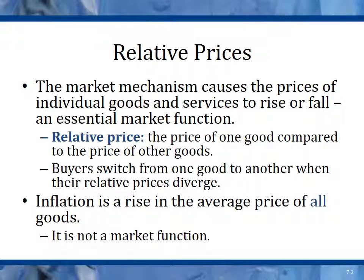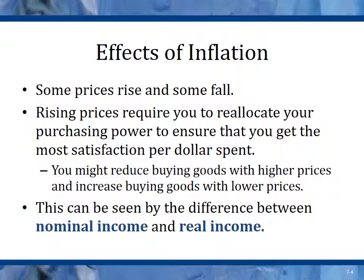Relative prices: the market mechanism causes the prices of individual goods and services to rise or fall due to supply and demand, as we talked about in Chapter 3. Relative price is the price of one good compared to the price of other goods — buyers switch from one good to another as relative prices change. Inflation is a rise in the average price of all goods and is not a market function. Many people believe it is solely a function of the size of the money supply.